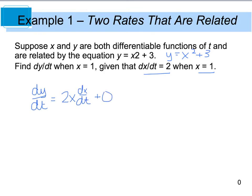We were given that dx/dt equals 2 when x equals 1. So, that tells me that dy/dt is equal to 2 times 1, and dx/dt equals 2. So, dy/dt is equal to 4.